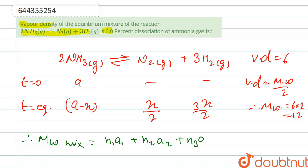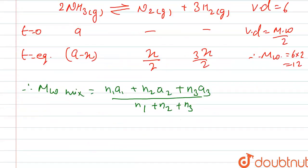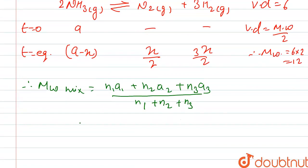Here n₁ is number of moles and a₁ is molecular weight. For NH3, number of moles is (a-x) at equilibrium, and molecular weight is 17. For N2, n₂ is x/2 and molecular weight is 28.